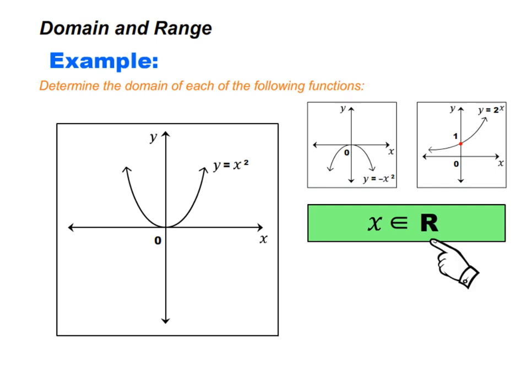We write the domain like this: x can be any real number. Remember that a real number is a number that can be plotted on a number line. So all three graphs share the same domain — x is an element of real numbers, meaning x can be any real number.